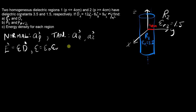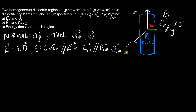Another important fact: the tangential component of both regions' electric fields will be equal. Also, epsilon, the total permittivity, is the product of the free space permittivity times the relative permittivity. Unless they explicitly say rho-s is not equal to zero, if they don't mention rho-s, you can assume it to be zero. Now that we have this groundwork laid, the rest of the question should go a lot smoother.